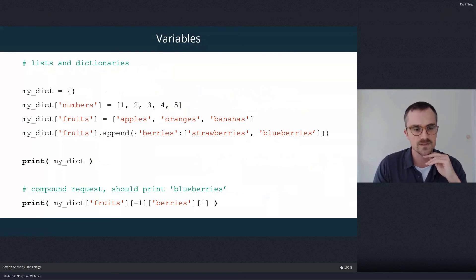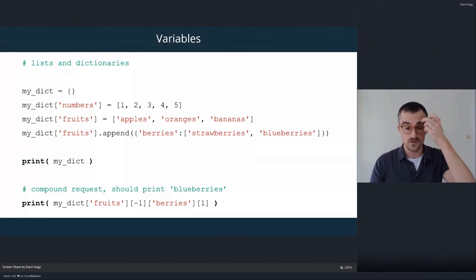So once we have this fruit key defined, you see it's linked to this list. So when we call that list from the dictionary, we can actually then run the append function or method on that list and add another entry into that list. So we're actually adding this whole thing, which is a dictionary, to the end of this fruits list.